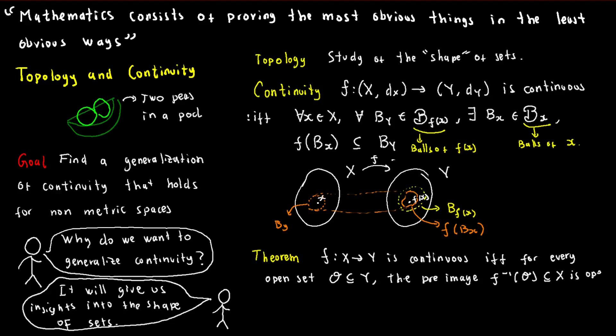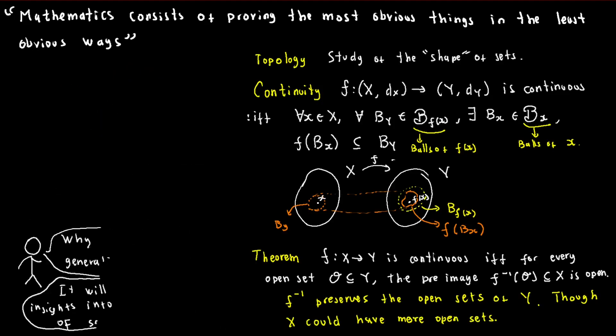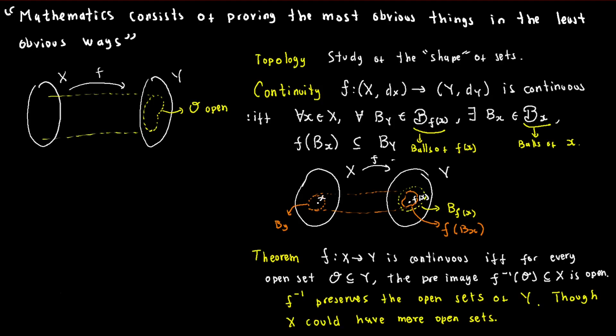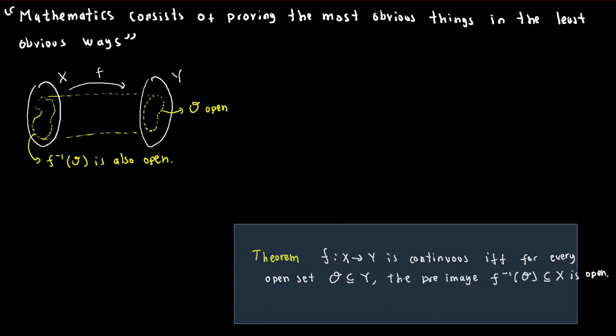This means that continuity preserves the shape of y in x, even if x might have additional open sets. It's like tracing a picture onto a new sheet of paper. The details might change, but the overall shape remains the same. Continuity ensures that the essence of y is faithfully captured in x without any significant distortion.